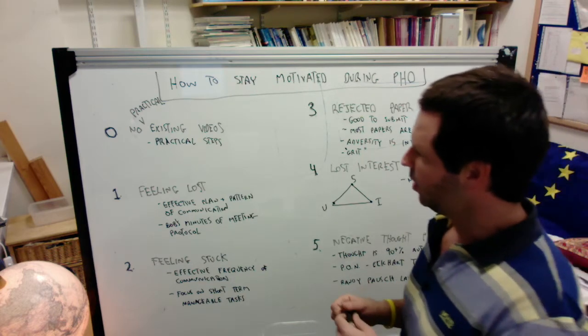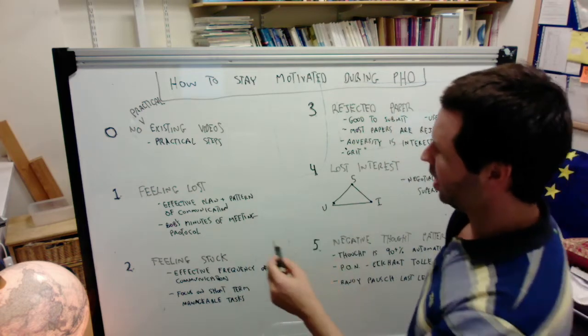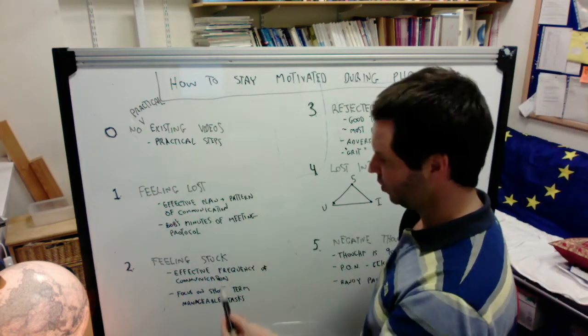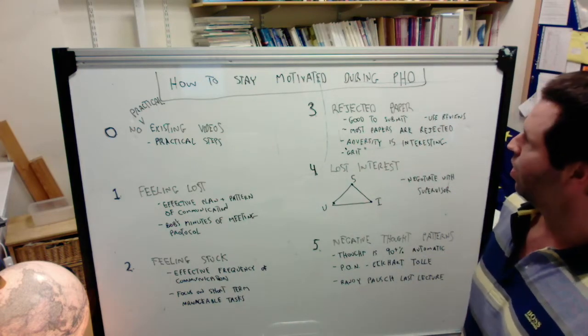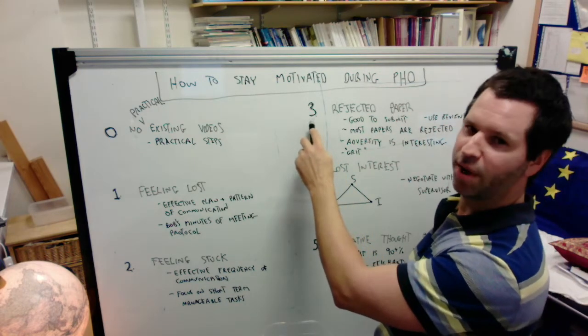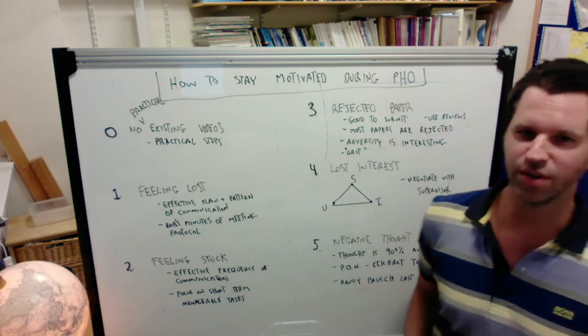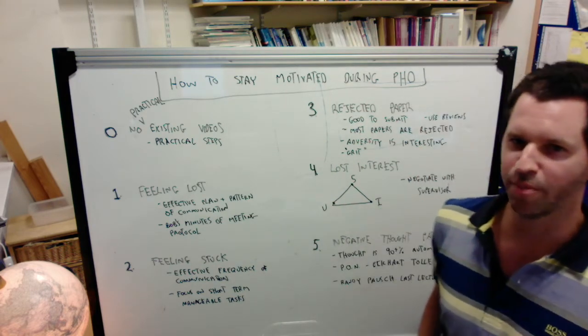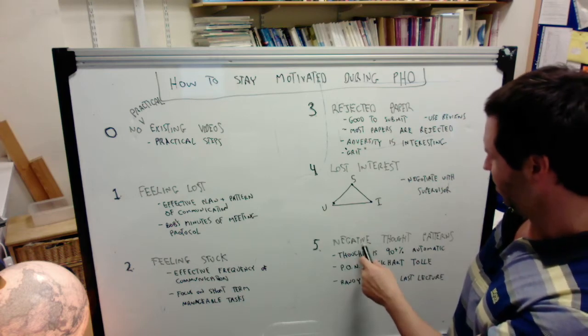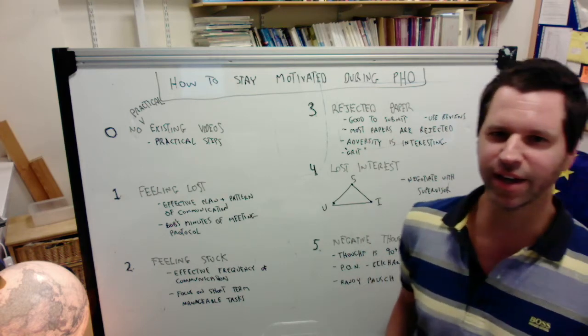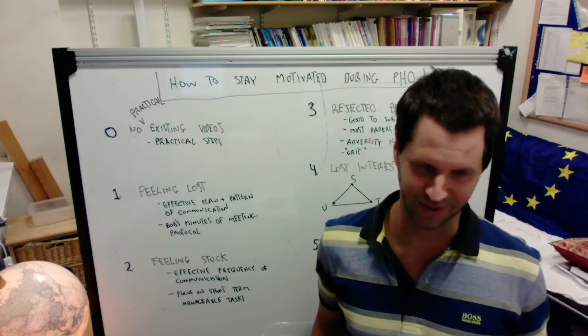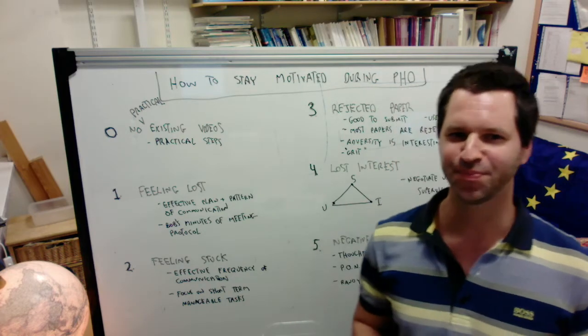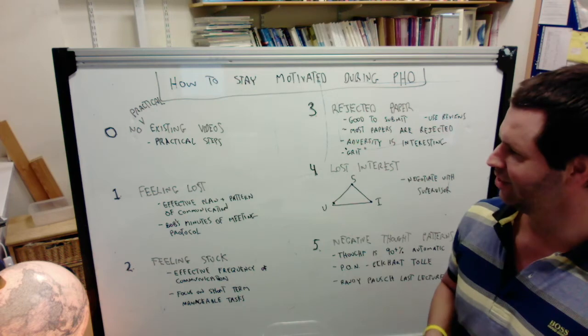They're broken down into these five categories. One is feeling lost. One is feeling stuck. Three is rejected papers. Four is a loss of interest in your topic. And then five is general negative thought patterns. Those are all very interesting topics. Let's talk about them.